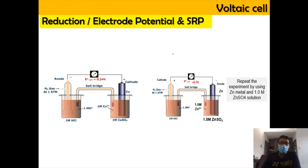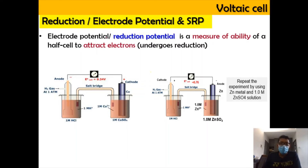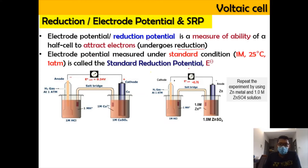This setup is used to find our reduction potential or electrode potential. The electrode potential, or reduction potential, is a measure of the ability of a half-cell to attract electrons — in other words, the tendency for the half-cell to undergo reduction. The standard reduction potential is the same thing but measured at standard conditions: 1 molar, 25°C, and 1 atm.